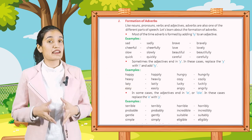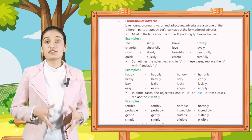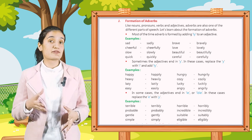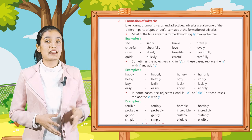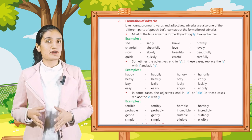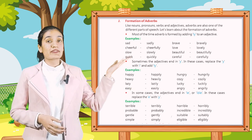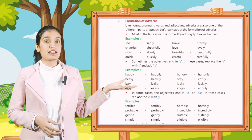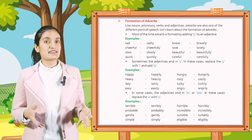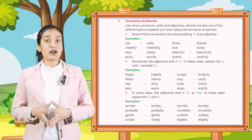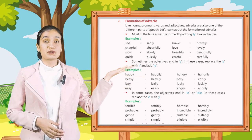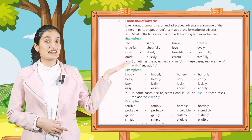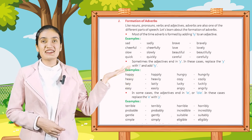Sometimes the adjectives end in 'y'. In these cases, replace 'y' with 'i' and add 'ly'. For example: happy → happily, hungry → hungrily, heavy → heavily, cozy → cozily, lazy → lazily, lucky → luckily, easy → easily, angry → angrily.